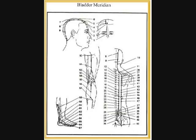UB58: headache, blurring of vision, nasal obstruction, epistaxis, back pain, hemorrhoids, weakness of the leg. UB59: heavy sensation of the head, headache, lower back pain, redness and swelling of the external malleolus, paralysis of the lower extremities. UB60: headache, blurring of vision, stiff neck, epistaxis, pain in the shoulder, pain in the back, pain in the arm.